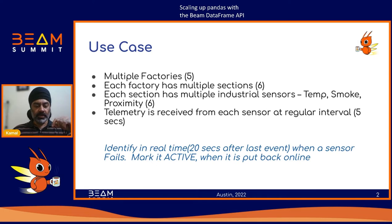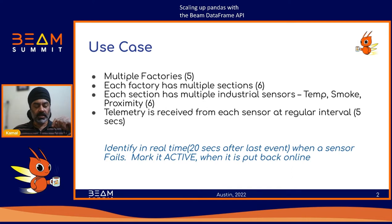In this particular demo, the data generated is for five factories, each factory has six sections, and there are six different types of sensors spread across them. The total sample size for the sensors is taken as 100 — so 100 sensors spread across these different factories. The telemetry for each sensor will be received every five seconds.